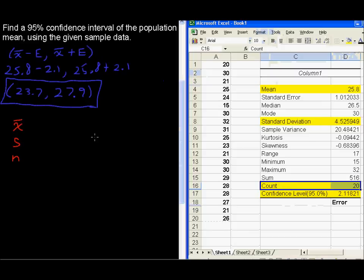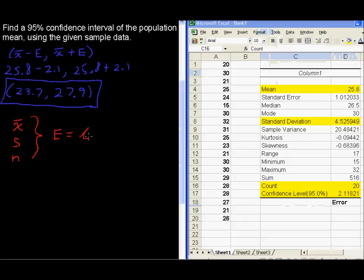So you can then use this to build the confidence interval where the error equals this t value on the t distribution. And you use the t distribution because you don't know the population standard deviation. You just have the sample standard deviation multiplied by sample standard deviation divided by the square root of the sample size.